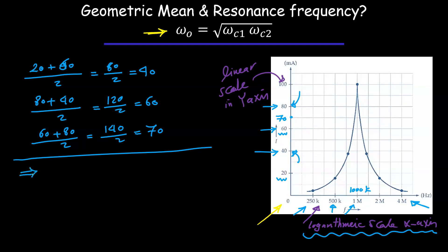But let's calculate that once with a geometric mean and once with arithmetic mean. So let's use arithmetic mean, the one that we all know. So 1,000 plus 250kHz divided by 2, that's 625. Of course, that's wrong.